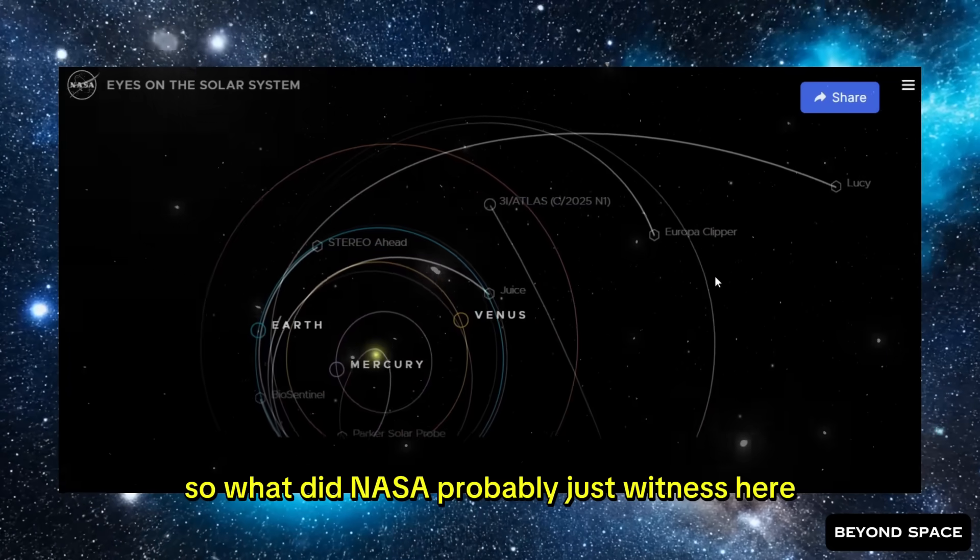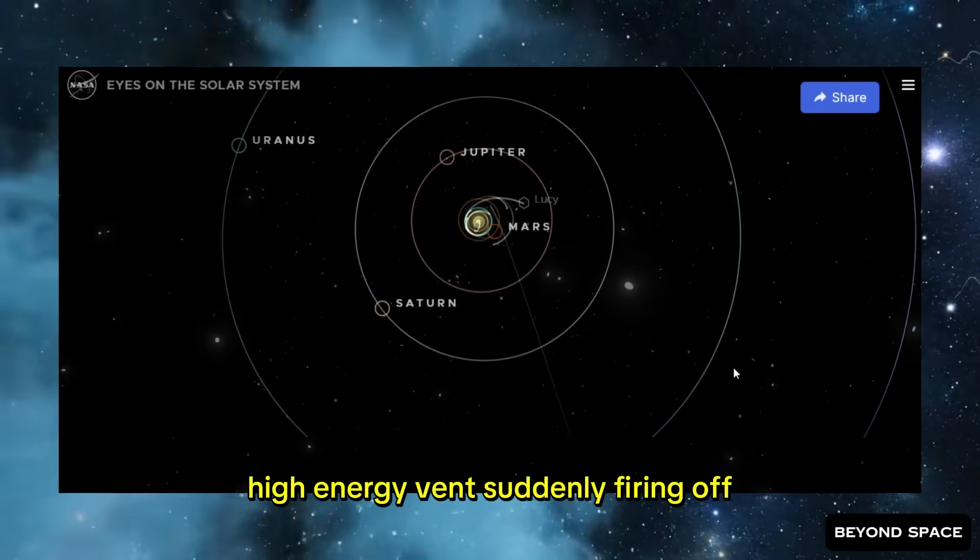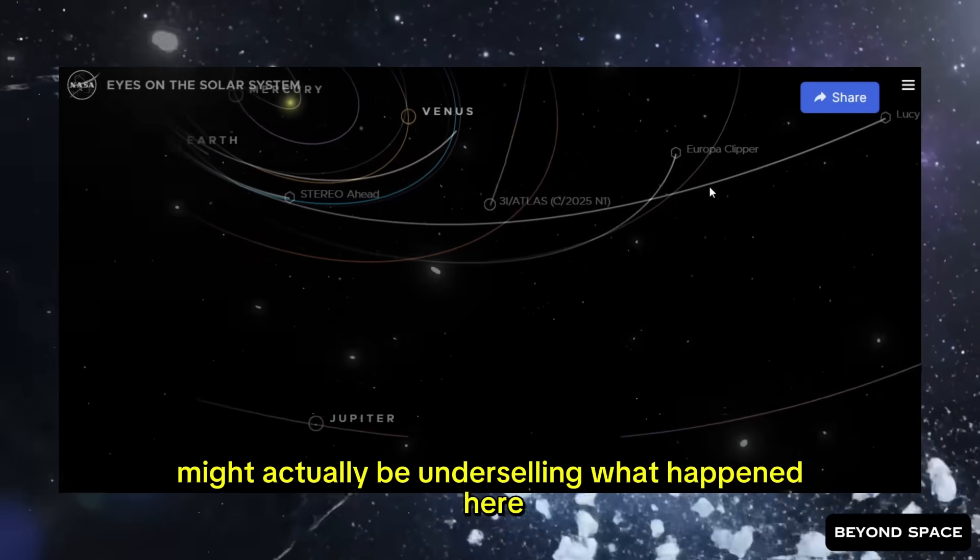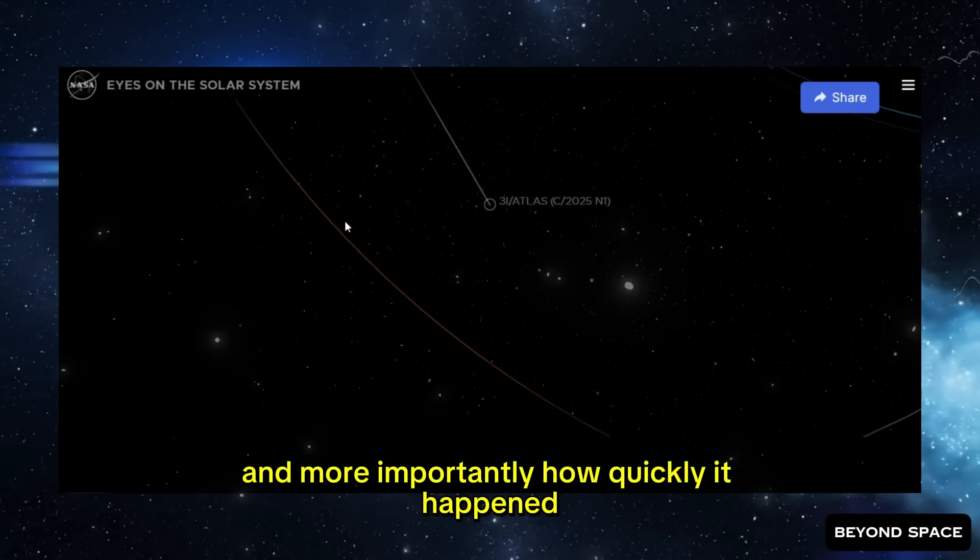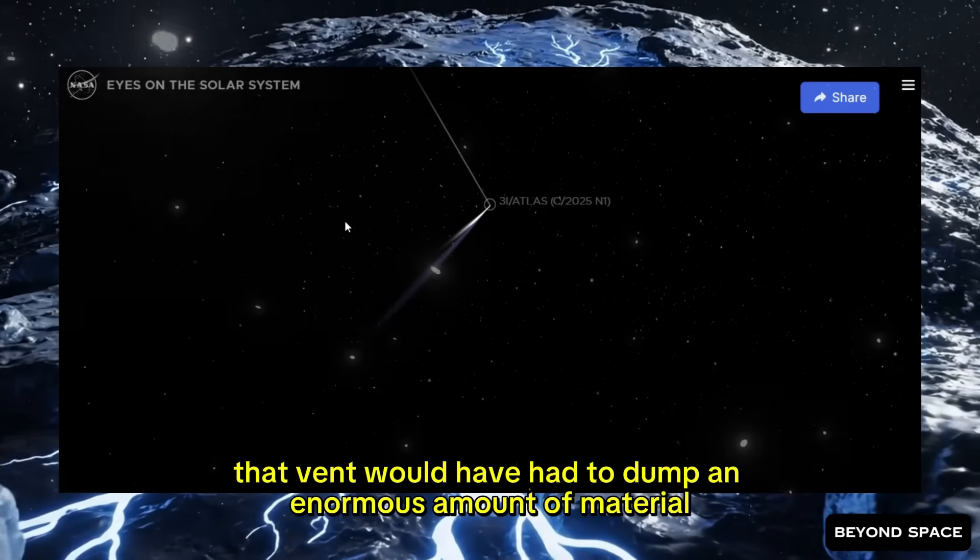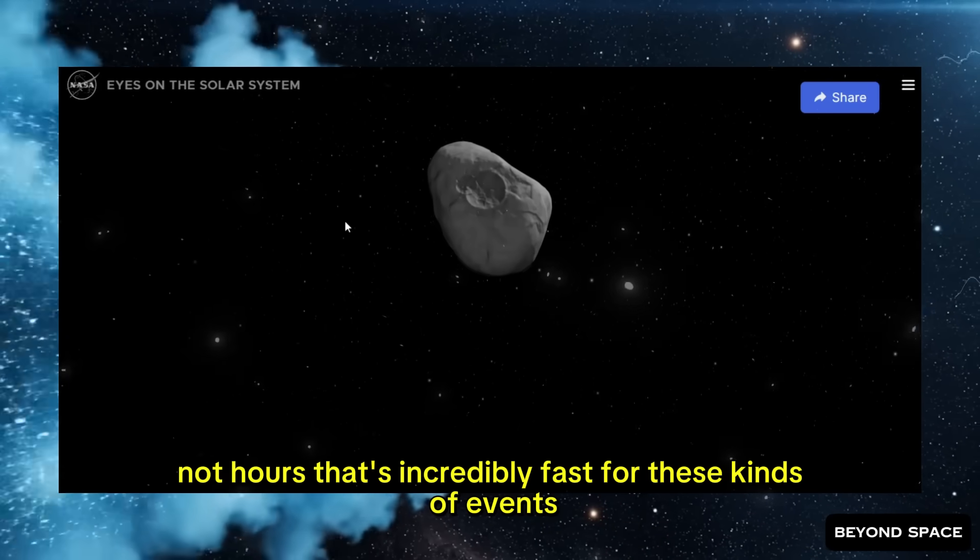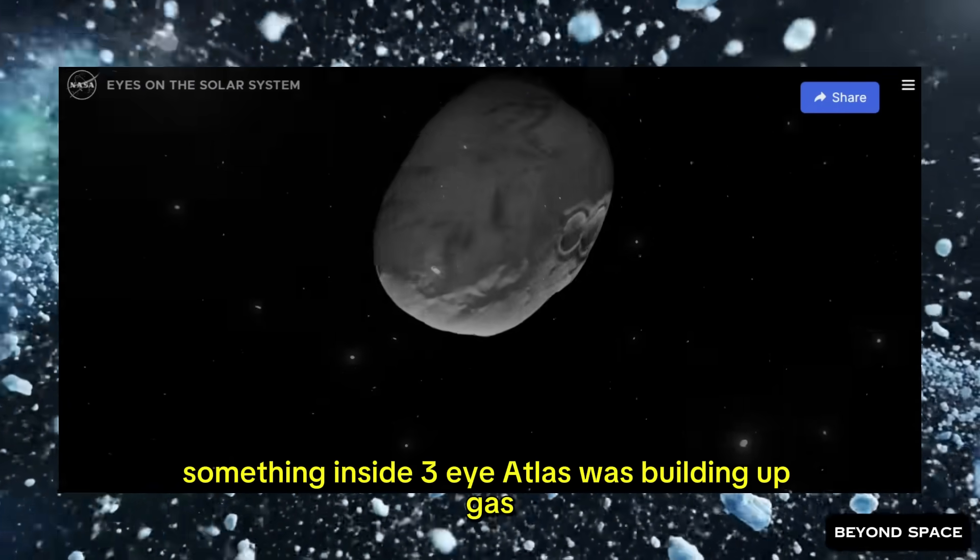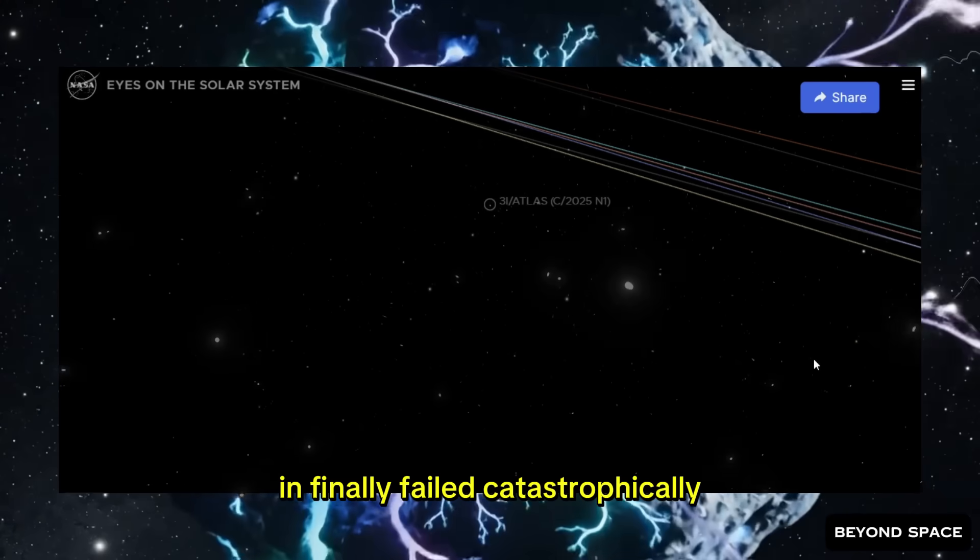So what did NASA probably just witness here? The theory that's getting the most traction right now is that we just caught a localized, high-energy vent suddenly firing off. Like a micro-outburst from a single crack, or maybe a specific patch on the nucleus surface. But calling it a micro-outburst might actually be underselling what happened here. Because when the team sat down and actually measured how much the brightness jumped, and more importantly, how quickly it happened, the numbers are kind of insane. To produce that kind of dramatic flash in such a short-time window, that vent would have had to dump an enormous amount of material in a burst that's measured in minutes, not hours. That's incredibly fast for these kinds of events. And that suggests something important. Pressure. Real, significant pressure. Something inside 3i Atlas was building up gas faster than it could slowly leak out through the surface. The pressure kept building until whatever was sealing it in finally failed catastrophically.